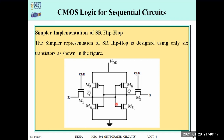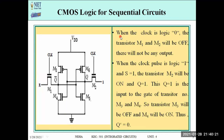Let us check how we get the SR flip-flop output. Case 1: when the clock is logic zero. When the clock is zero on M1 and M2, then M1 and M2 will be off. There will be no output — the circuit holds its previous state.